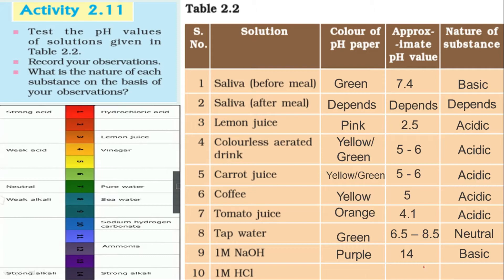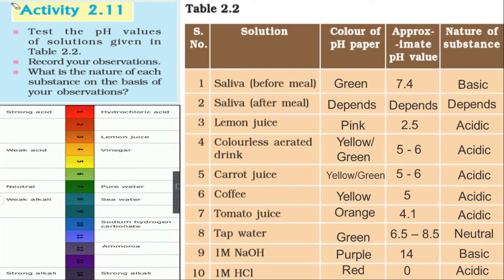1 molar NaOH: the color of the pH paper will be purple, approximate pH value is 14, and its nature is basic — in fact it is a strong base. 1 molar HCl: the pH paper shows red, approximate pH value is 0 or 1, and its nature is acidic — it is a strong acid. Take a snapshot of this table.